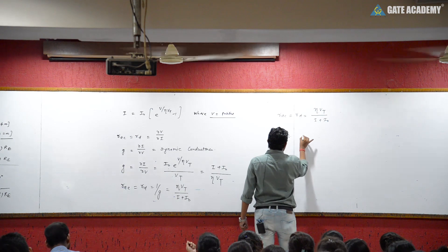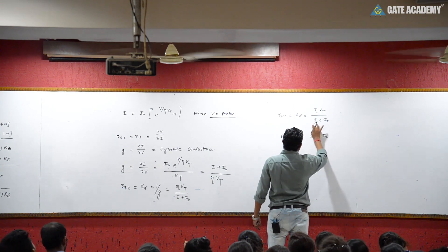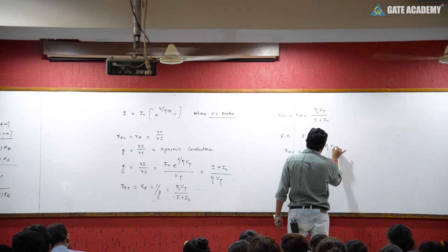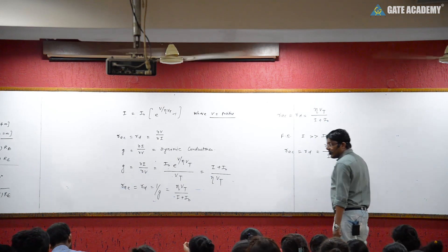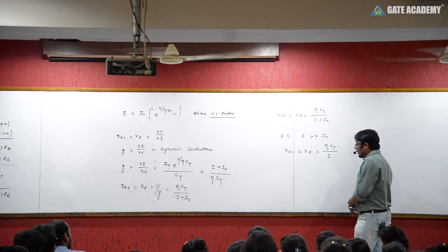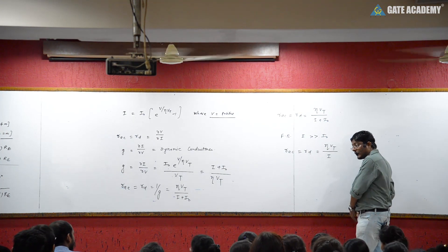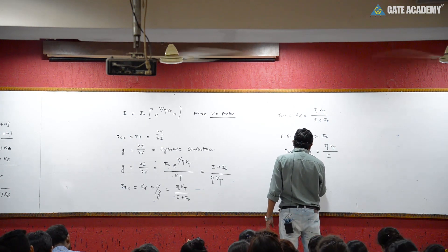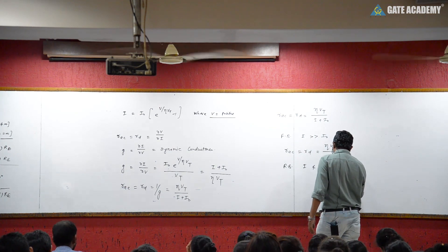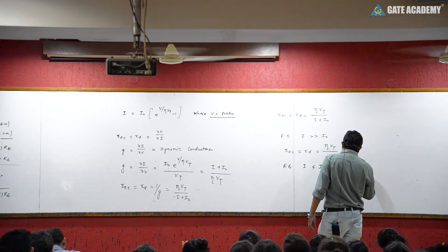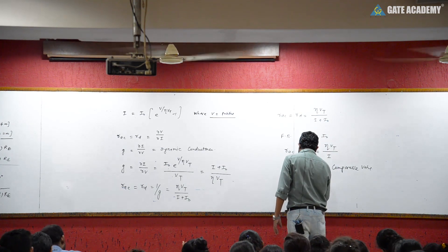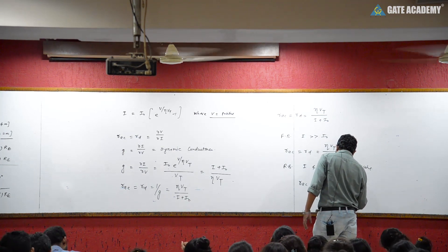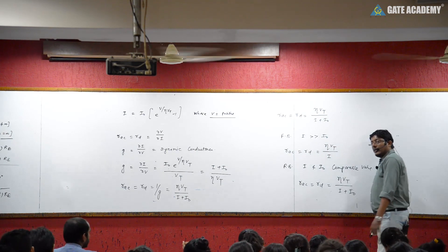This is the forward bias case. In forward bias, the forward bias current I is very much greater than I₀. So AC Resistance or Dynamic Resistance of the diode simplifies to eta Vt upon I. For reverse bias, I and I₀ become comparable values, so you cannot neglect either term.